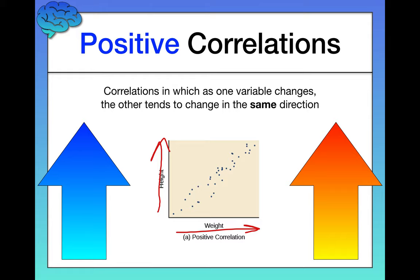So here, this is a great way to tell what type of relationship you're looking at on a graph by trying to draw a line that best fits the data. So here, we have a line that starts from the bottom left and goes up to the top right. And that's an easy way to tell that this is a positive correlation.